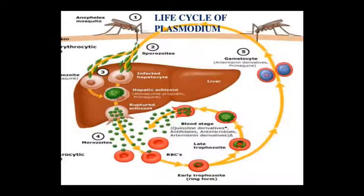The life cycle of Plasmodium occurs in the mosquito and in the human host. Sporozoites are released and infect the liver. Hepatocytes are infected, hepatic schizonts are created, and hepatic cells rupture. The schizont is released and converted, then the erythrocytic cycle will continue.